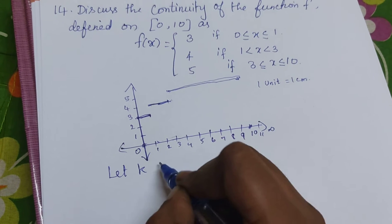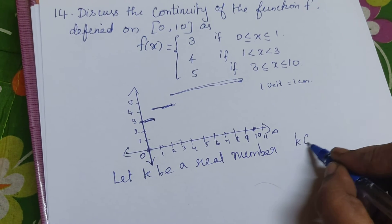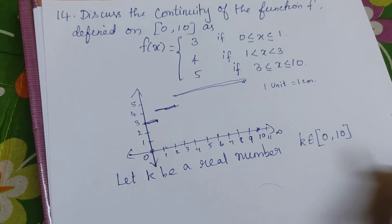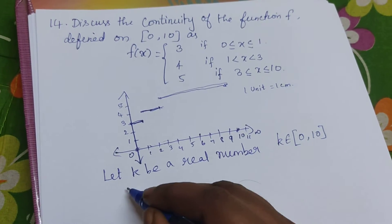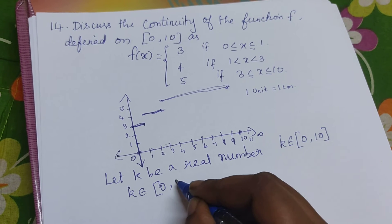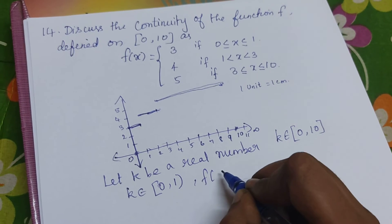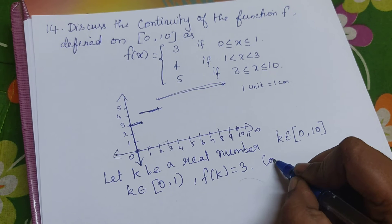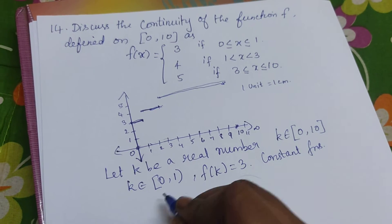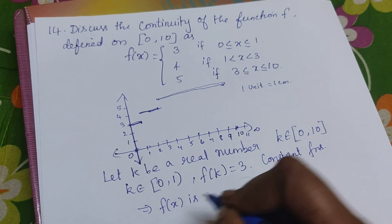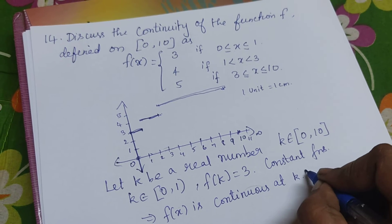Let k be a real number from the closed interval. We will discuss continuity in segments. First, let k belong to the closed interval [0, 1) — not including 1. In this case f(k) = 3, which is a constant function. Constant functions are continuous, so f(x) is continuous for all k in [0, 1).